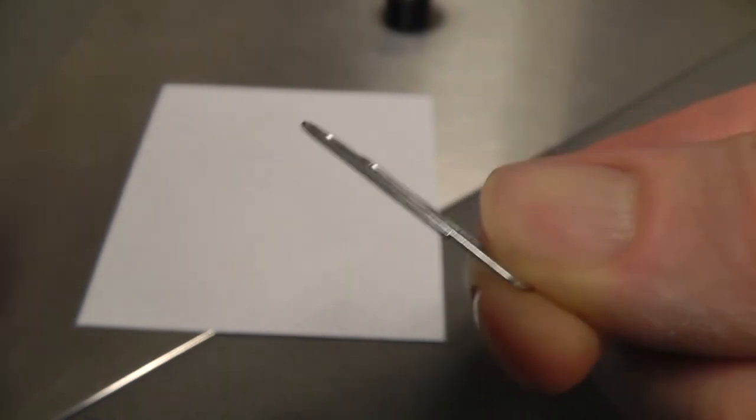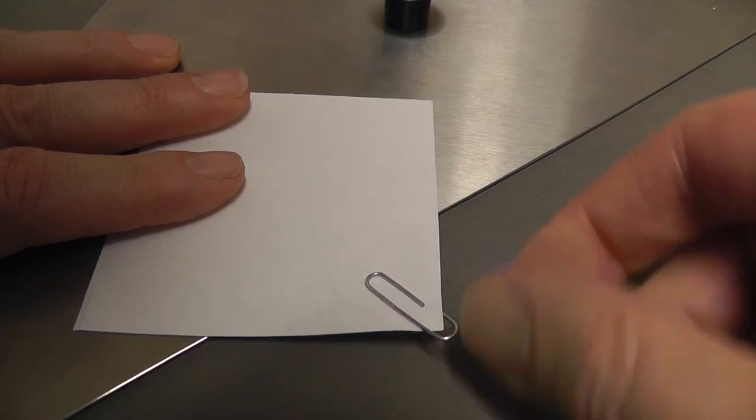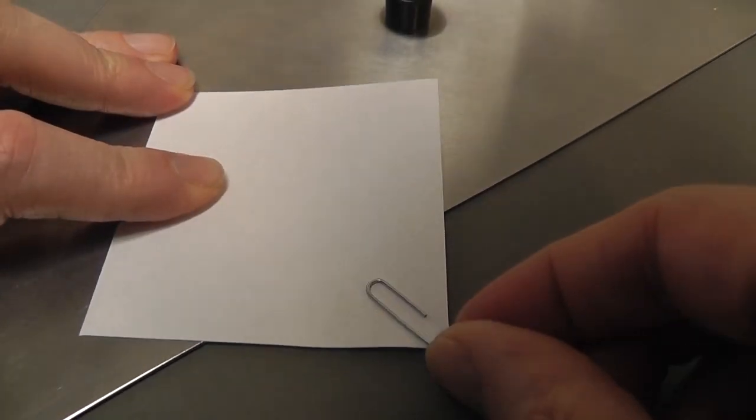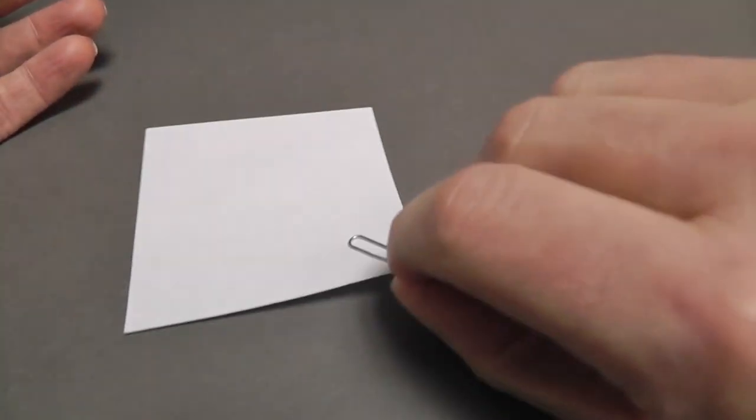Hold that side of the paper clip up and slide it onto the corner of the square so the small loop ends up on top. If the small loop ends up on the bottom, just flip the paper over so it is on top.